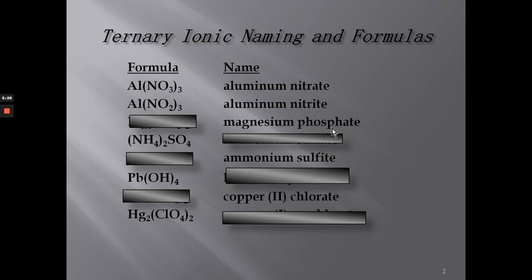Magnesium phosphate. Magnesium is in group two and has a plus two charge. The phosphate polyatomic ion is PO₄³⁻. Since it has a negative three charge and magnesium is plus two, if we take the charges and cross them we know what the subscripts are going to be. Three times two is six, and two times three is six, and six minus six equals zero.